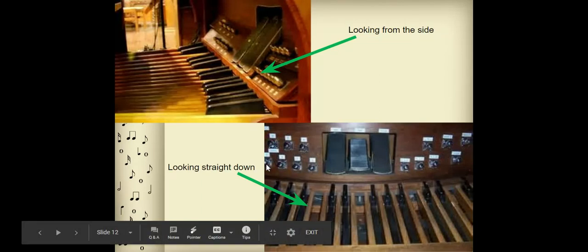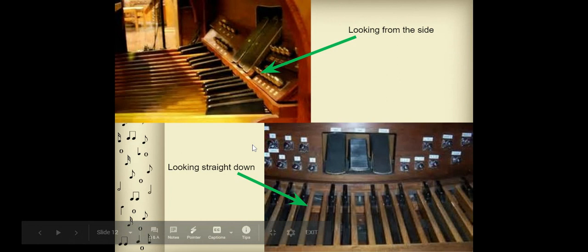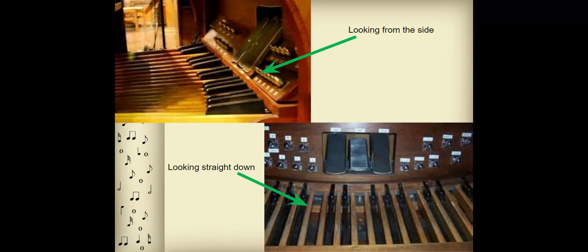Over here are pistons, and you use this to make combinations of stops, and this is basically like a shortcut. So instead of pulling a bunch of stops, you just hit one thing, and it saves it in like a memory bank. And so it'll just pull all those stops for you at the same time.